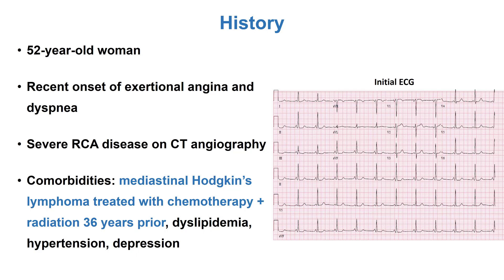This was a middle-aged woman who presented with exertional angina and dyspnea. She had a CT angiogram that showed severe disease in the right coronary artery. Importantly, she did have Hodgkin's in the past and had undergone chemotherapy as well as radiation therapy 36 years prior.